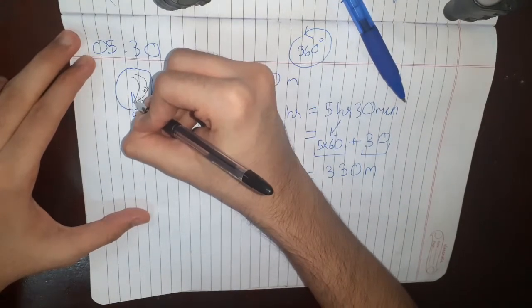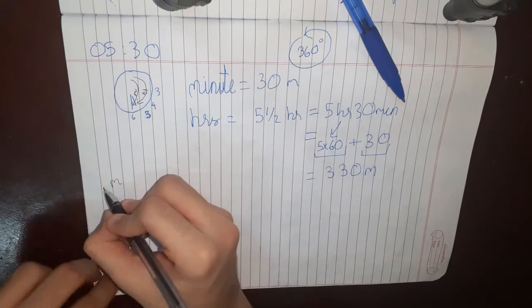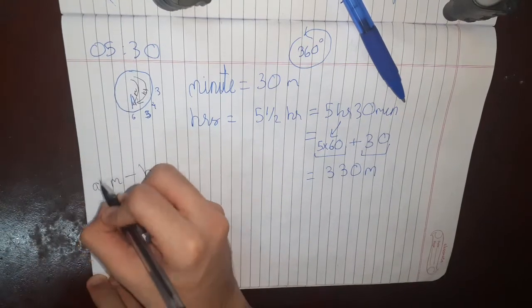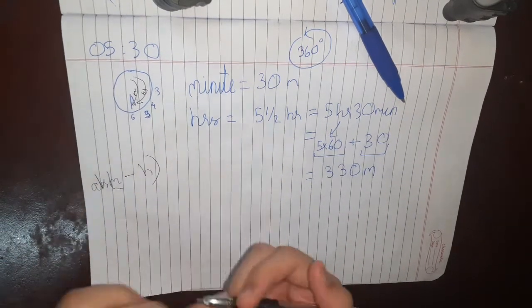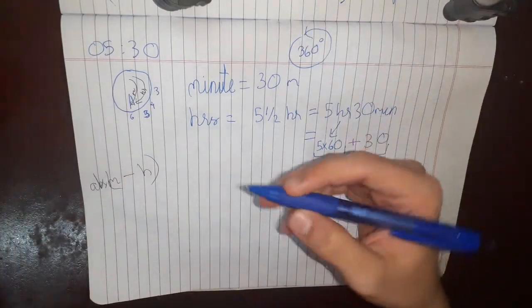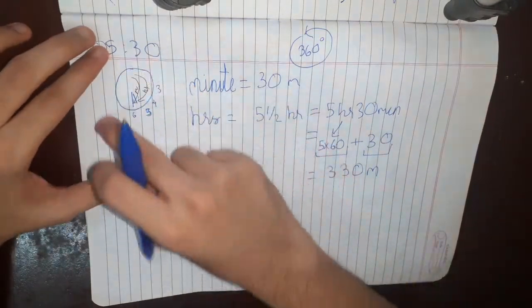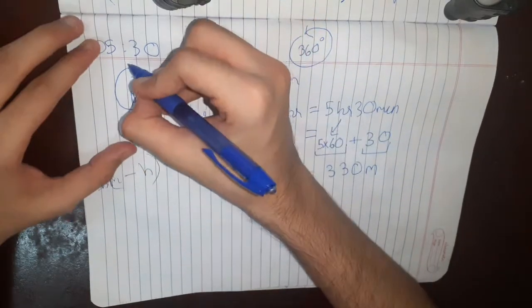So this will be the hour's angle. This will be the minute's angle. So my answer will become the difference between them, the absolute difference between them. I'll calculate the distance of both of them from 0, assuming 12 o'clock as 0.